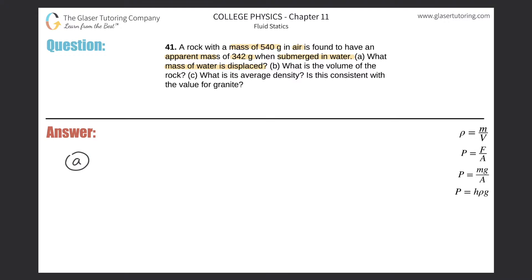So we have a simple formula here that says the mass of the water displaced should be equal to the mass of the object in air subtracted by the apparent mass of the object in water. Now all we need to do is plug in the numbers. Mass in air was 540 grams, the apparent mass is 342, so the mass of the water displaced is simply 540 minus 342, which equals 198 grams.